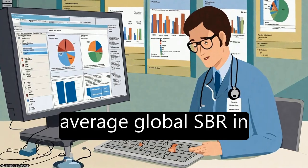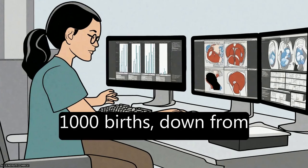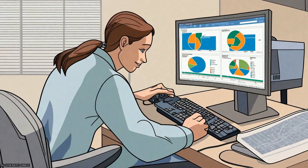The estimated average global SBR in 2015 was 18.4 per 1,000 births, down from 24.7 in 2000, a 25.5% reduction.